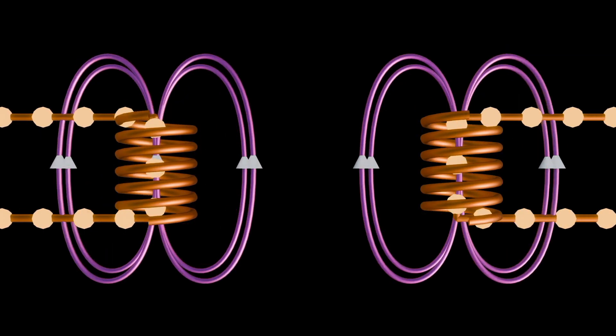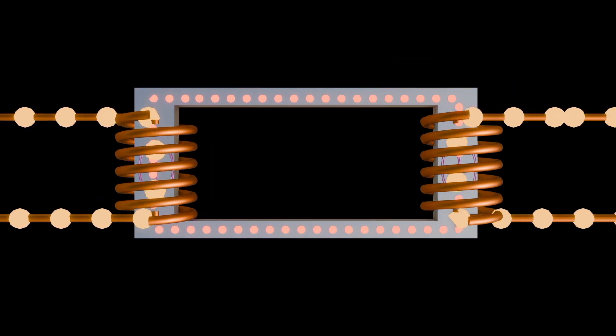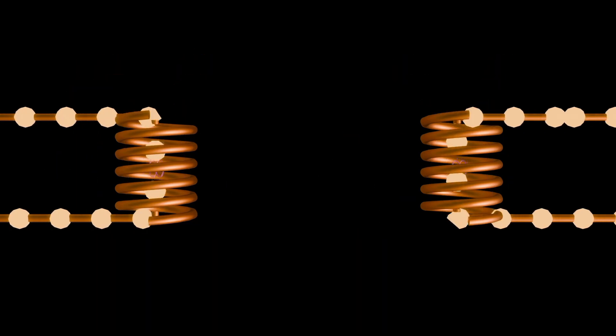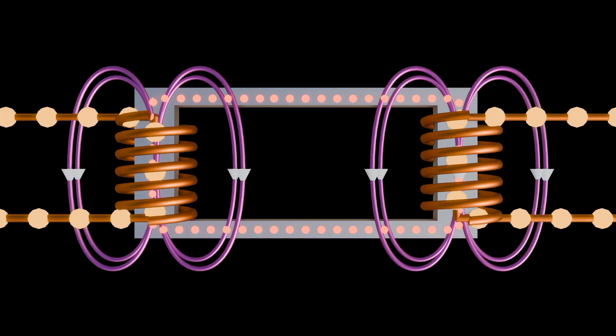Based on the principle of electromagnetic induction, when an alternating current flows through the primary coil, it creates a changing magnetic field around the coil. According to Faraday's law of electromagnetic induction, this changing magnetic field induces a voltage in the secondary coil.